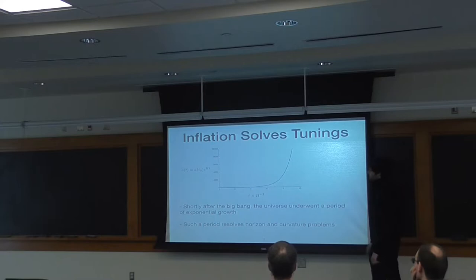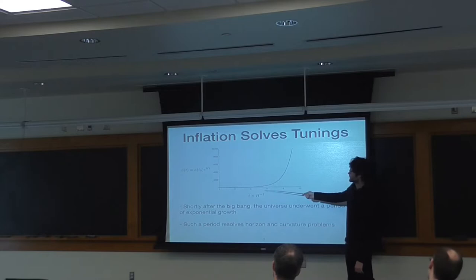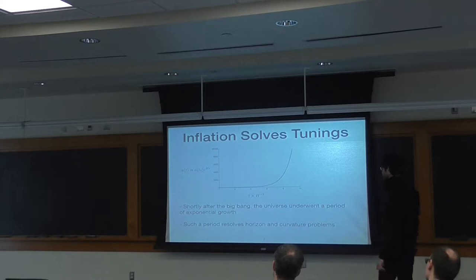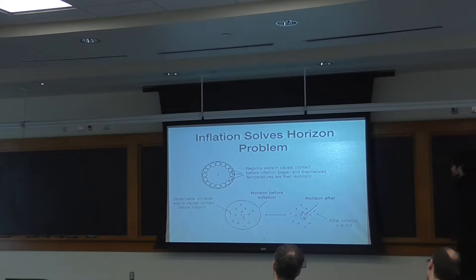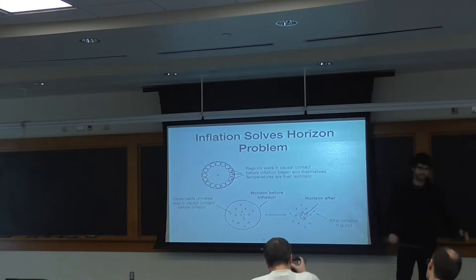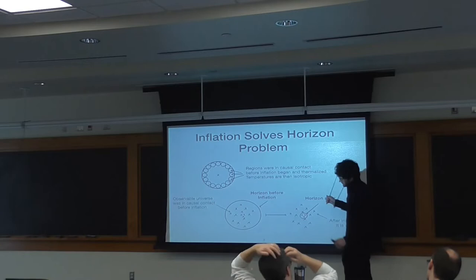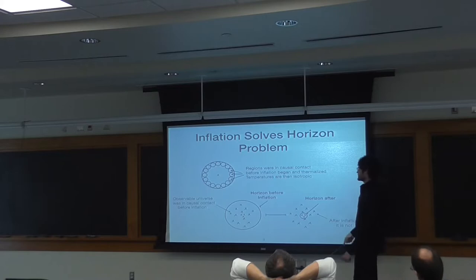It turns out that an inflationary era elegantly solves both of these problems in one fell swoop. The idea is that before radiation domination, shortly after the Big Bang, the universe underwent a period where the scale factor grows exponentially. It turns out this rapid expansion explains the horizon and curvature problems. The horizon problem is solved because regions in the sky that look like they're just coming into causal contact today were actually in causal contact at an earlier point in the universe — right before inflation started. The entire observable universe was in causal contact and had a chance to thermalize. Inflation then decreases the horizon size, pushing regions outside each other's causal horizons, and they're only coming back in today — that's why the temperature was so isotropic.